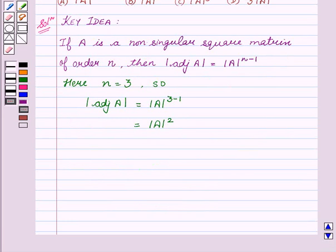Therefore, B, which is square of determinant A, is the right answer.